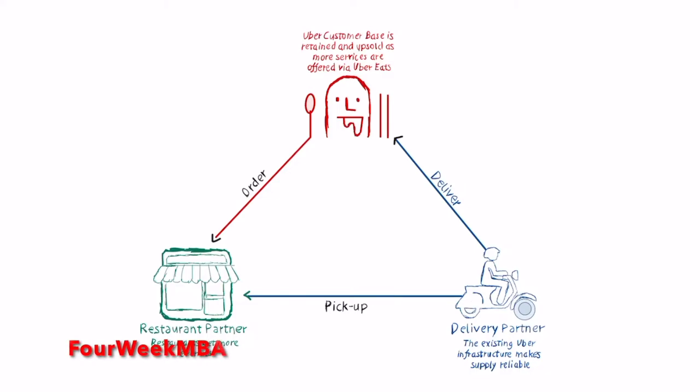In this session, we're going to see how a three-sided marketplace works. We're going to draw from the example of one of the most powerful three-sided marketplaces, which is the Uber food delivery side.